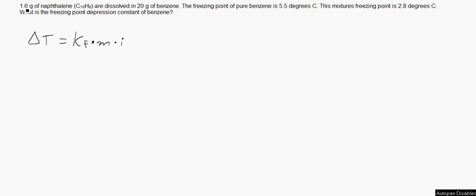Okay, in this problem, we have 1.6 grams of C10H8 dissolved in 20 grams of benzene. The freezing point of pure benzene is 5.5 degrees Celsius. This mixture's freezing point is 2.8 degrees Celsius. What is the freezing point depression constant of benzene?